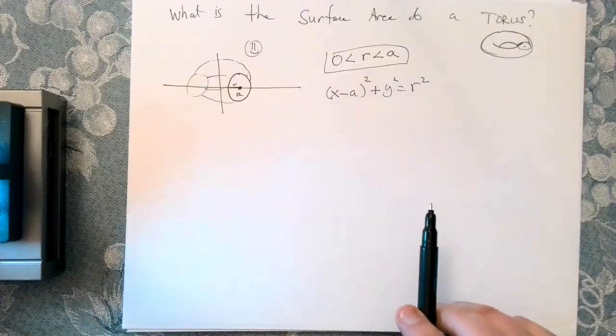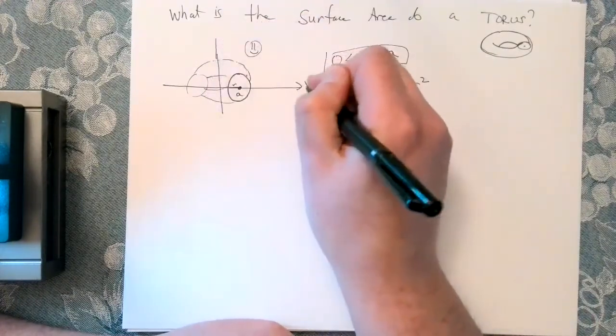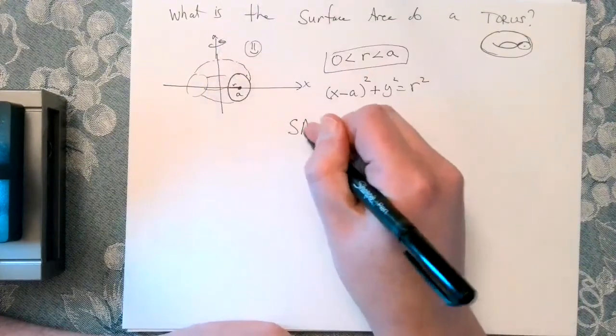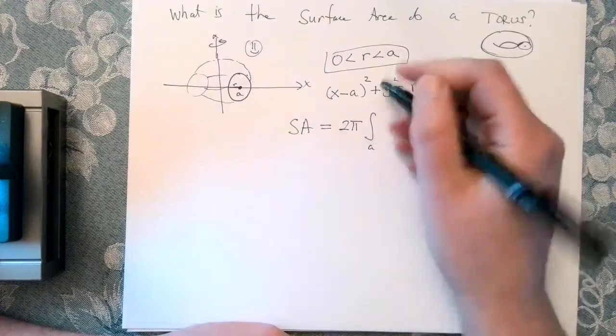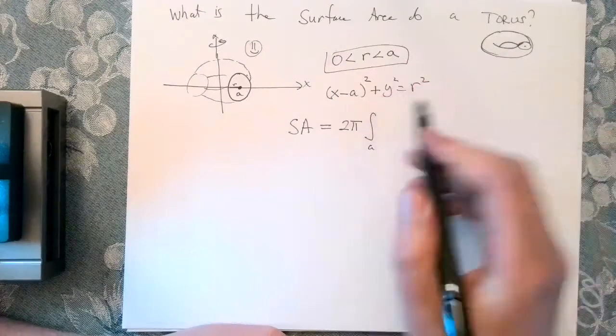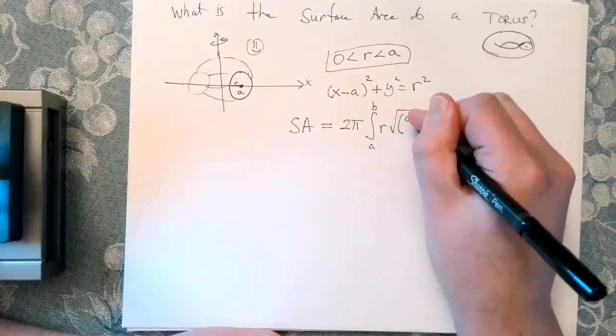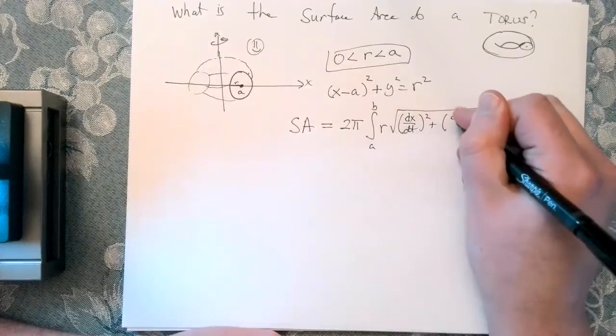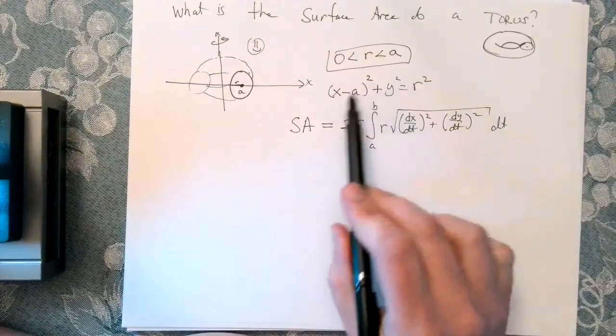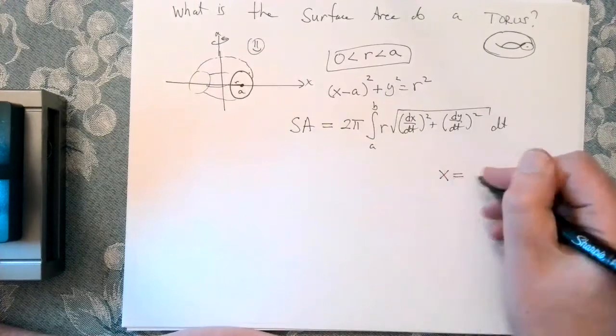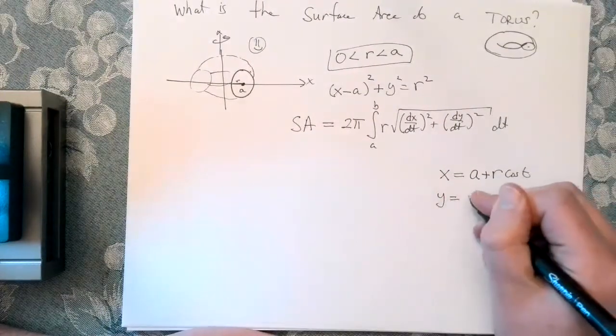So maybe this would be a little bit easier to solve using parametric equations. And so we chose to rotate around y. So let's give the surface area formula that calculates surface area when your curve is defined parametrically. So we'll describe this parametrically in just a moment. So we have got a translated circle here. So we want x is equal to a plus r cosine of t. y is equal to r sine of t.